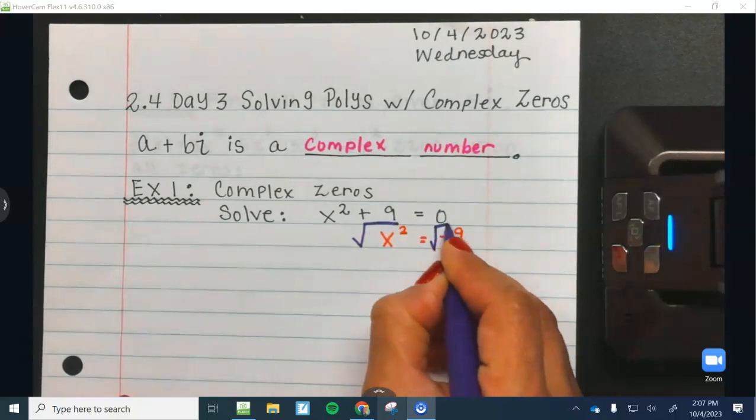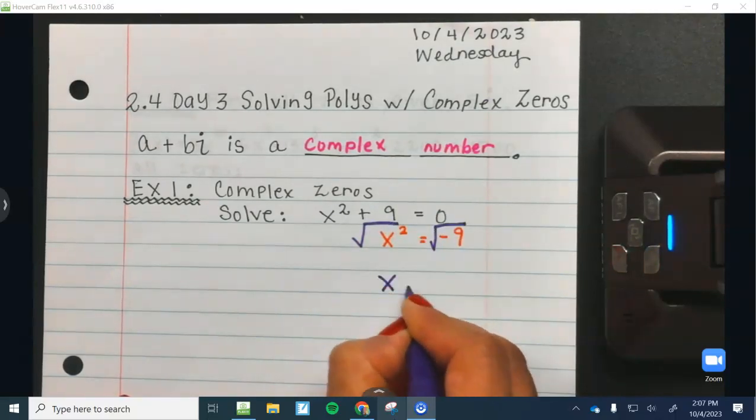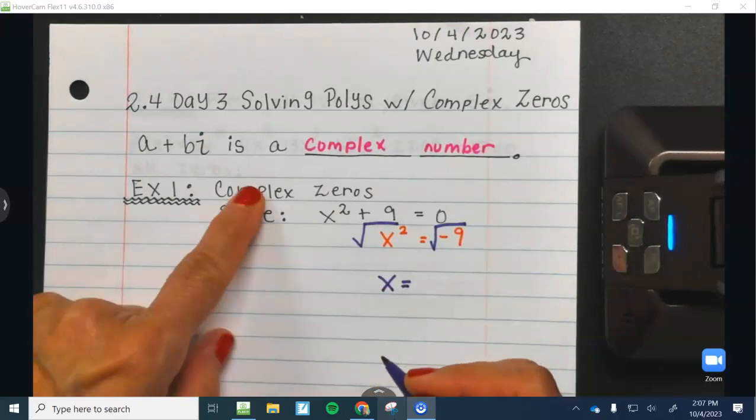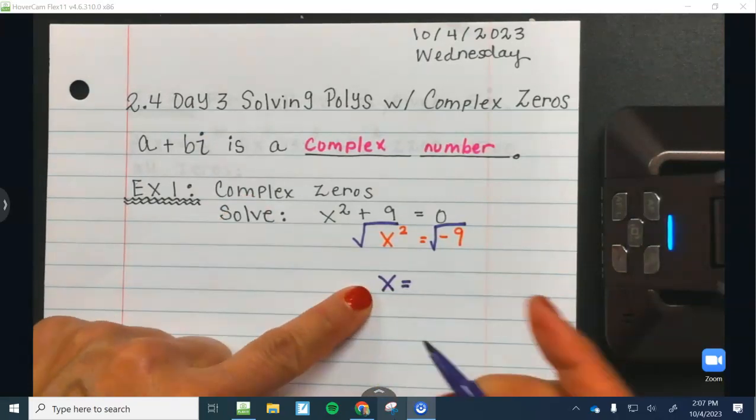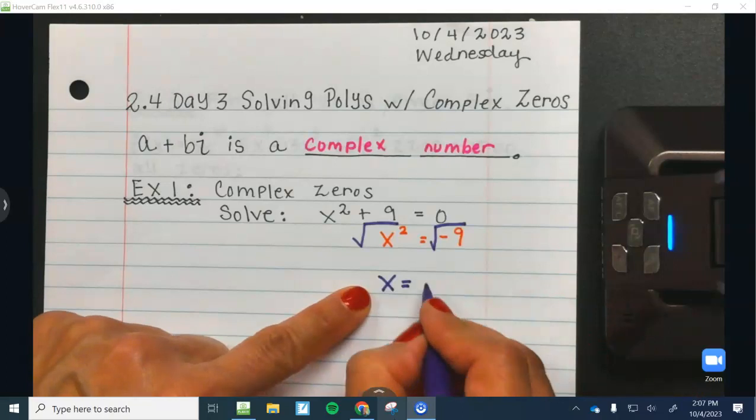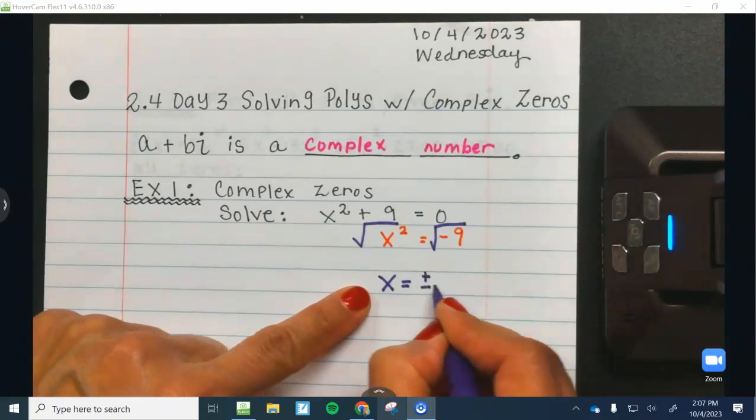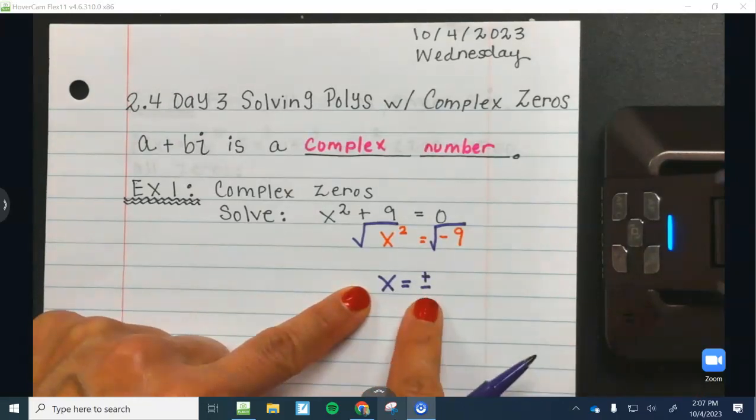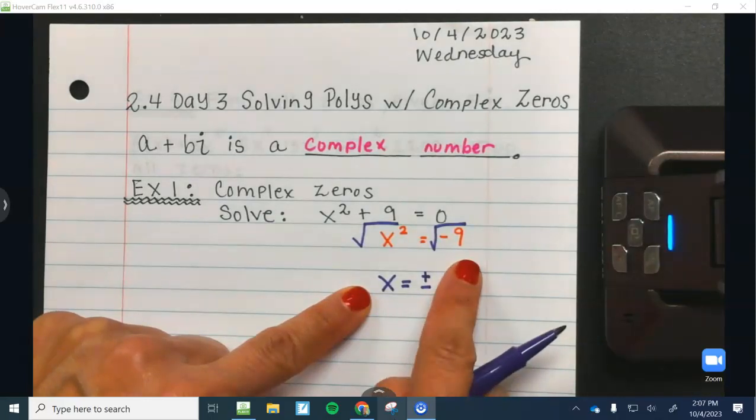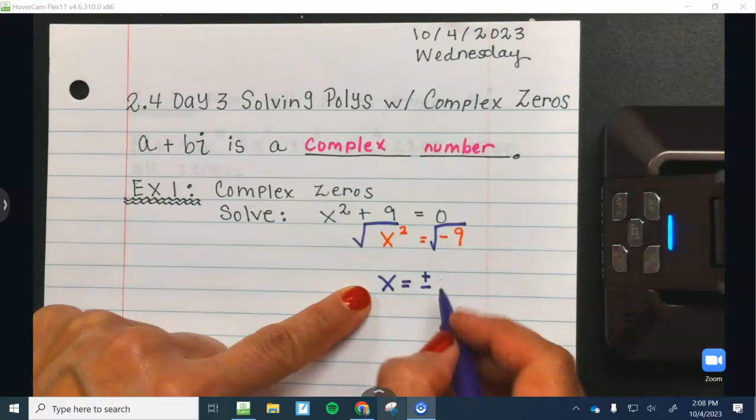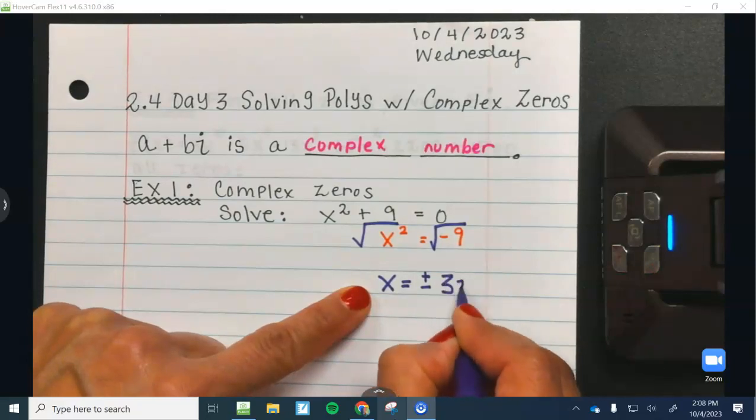So the only time that you get a complex zero, a complex answer, is when you square root something. So you're always going to have two answers. What is the square root of negative 9? 3i. Mm-hmm. Good.